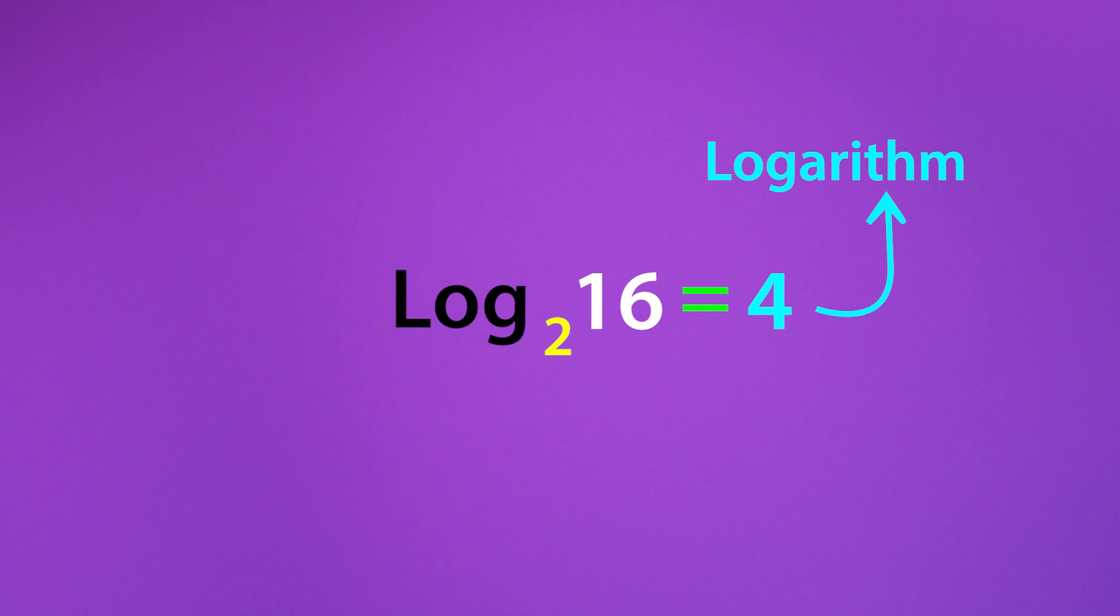4 is called the logarithm and 2 is called the base. Logarithm or exponent is a number that tells how often the base is used in multiplication and base is the number that is multiplied repeatedly.